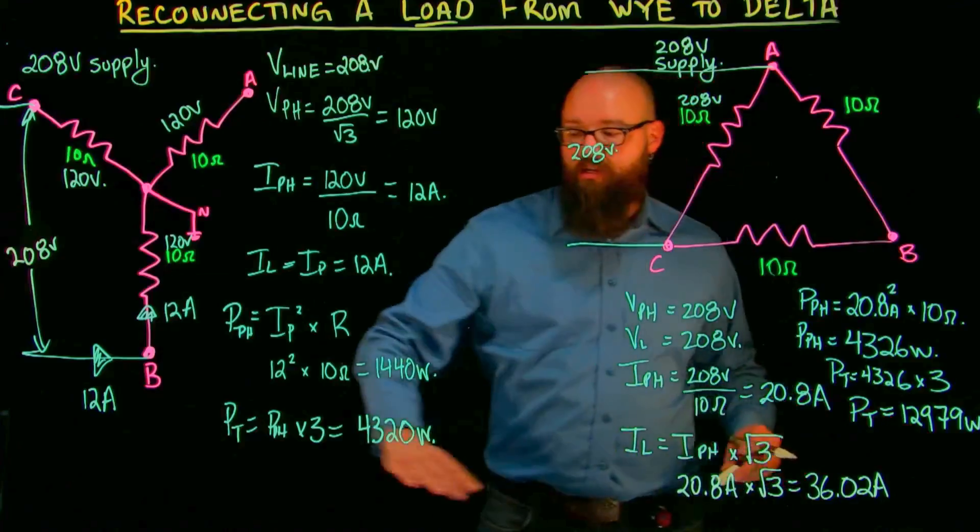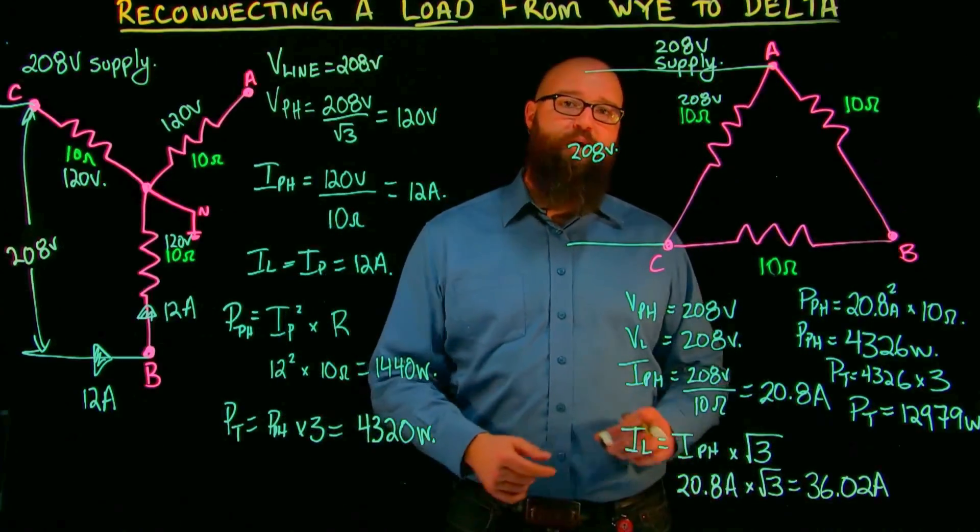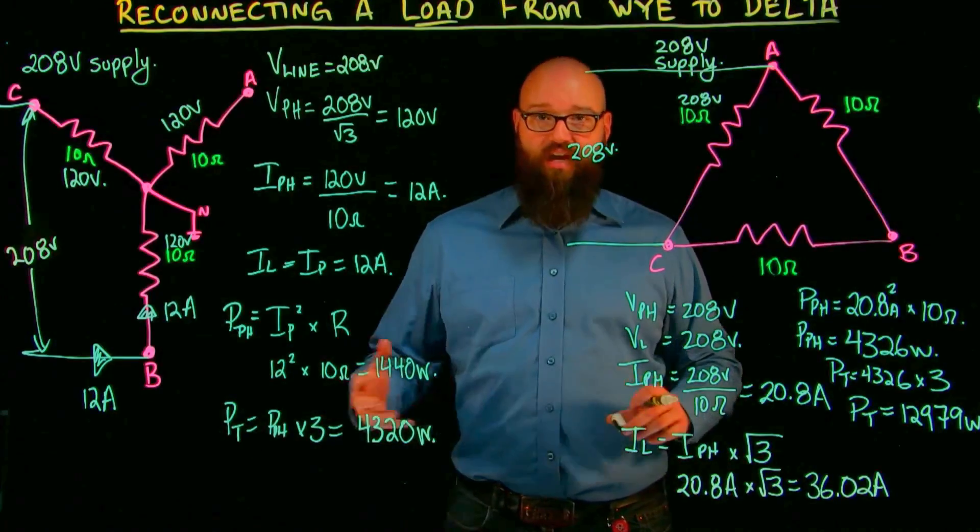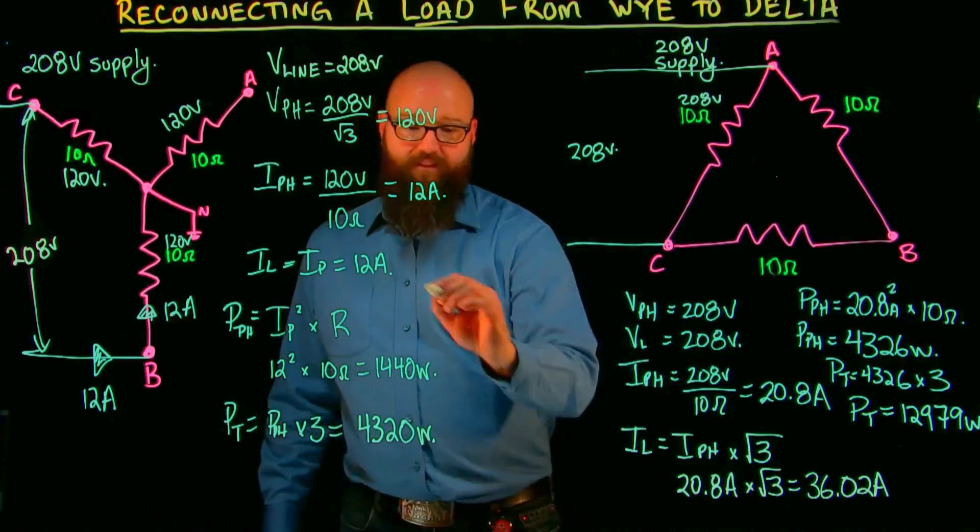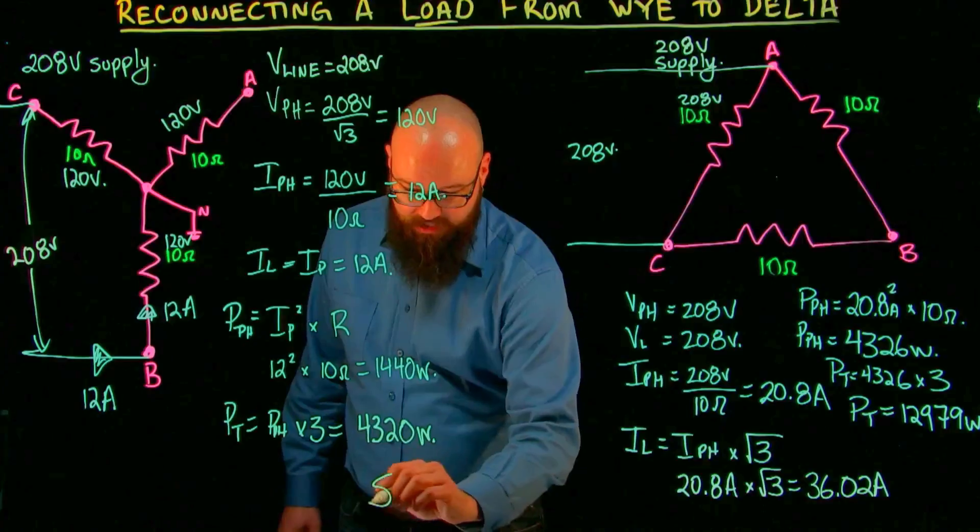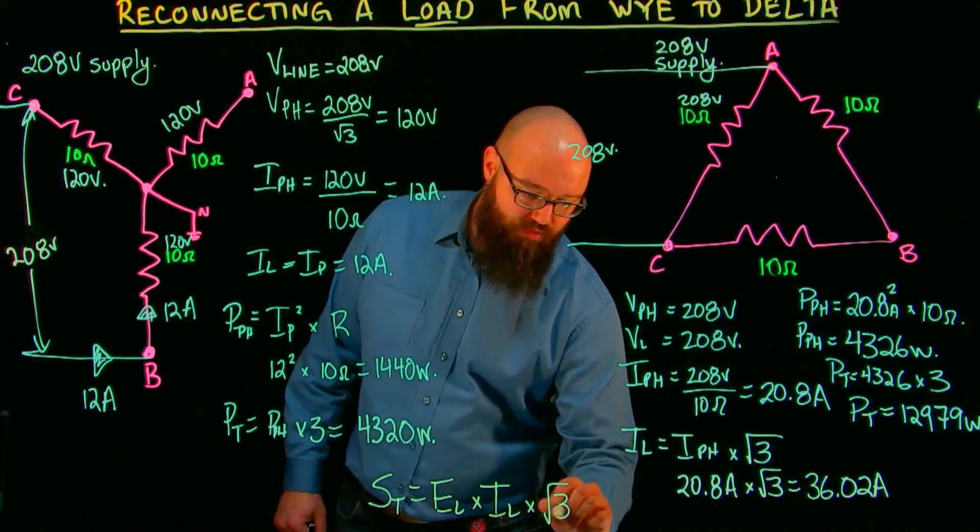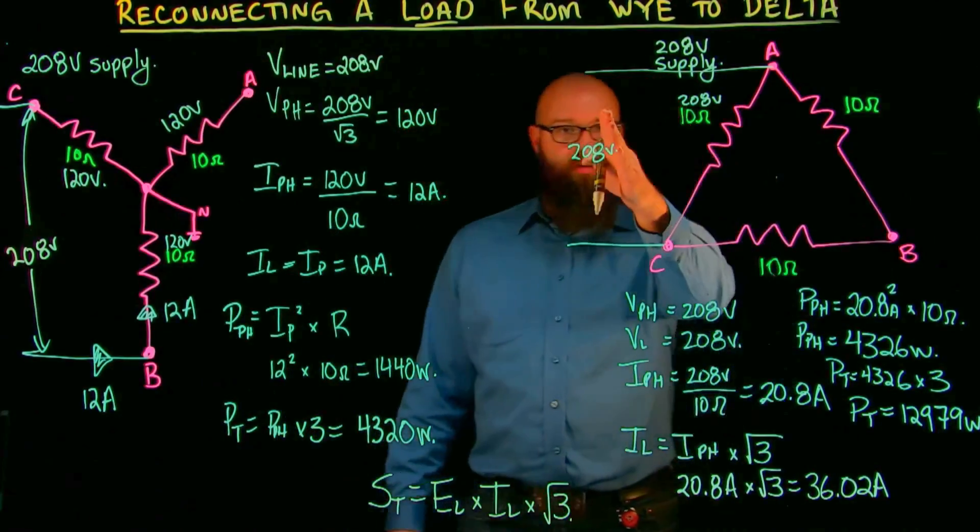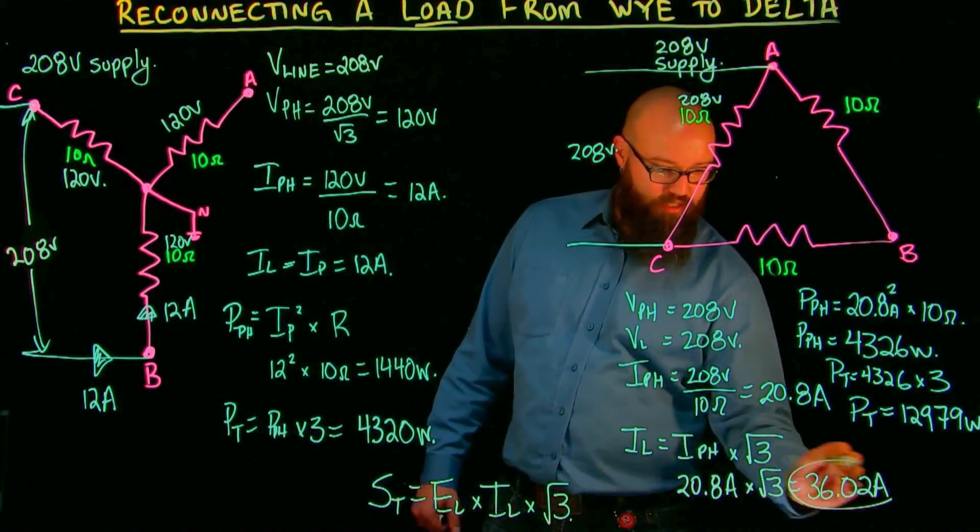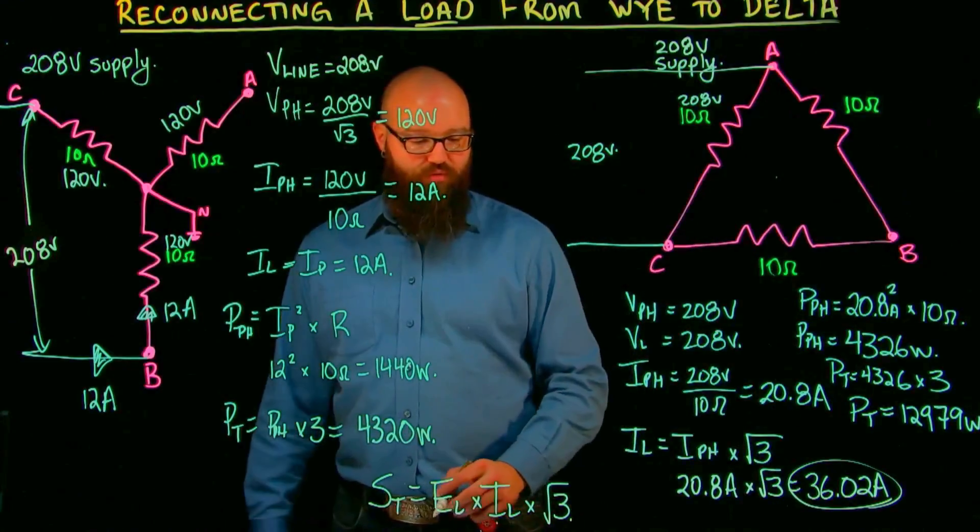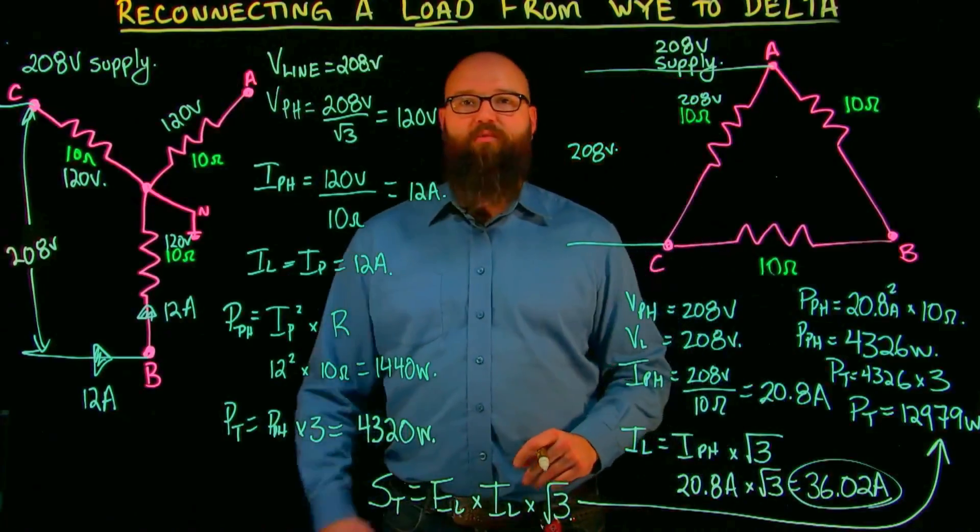If you ever want to check this formula, easiest way to do it in this case, because it's a unity load, I know that apparent power is equal to true power. In that case, I can use this formula: S total equals E line times I line times root 3. In this case, E line is 208 volts, I line we calculated out was 36.02 amps times root 3. It should work out roughly around that number.